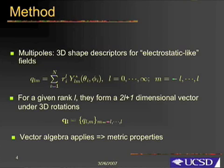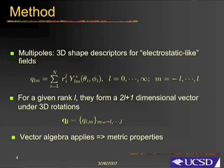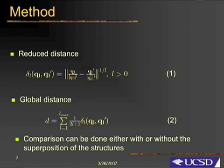For each rank there are 2L+1 moments which together form a 2L+1 dimensional vector. As with any other vector, these parameters form a vector algebra and therefore they have metric properties. The metric properties of the multipole moments can be used in order to define a distance in the configuration space of the protein.